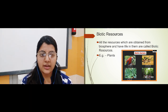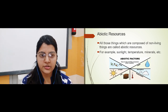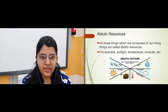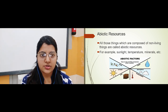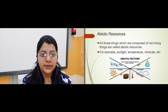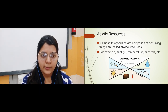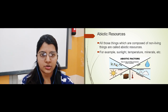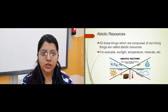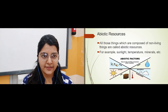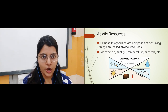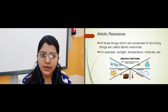The second part under origin is abiotic resources — the opposite of biotic resources. All those resources which do not have life in them and do not come from the biosphere are called abiotic resources. For example, sunlight and temperature — these are composed of non-living things and do not have lives in them, so they are abiotic resources.